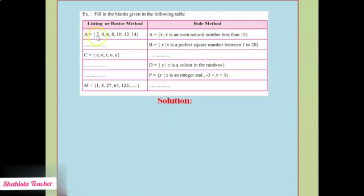First one: A is equal to curly bracket {2, 4, 6, 8, 10, 12, 14}. Now here 2, 4, 6, 8, 10, 12, and 14 are all even numbers — even natural numbers. So here we will write: A = {x such that x is an even natural number less than 15}.